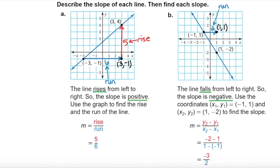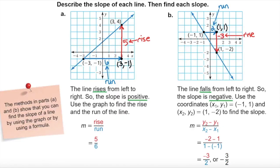Notice that 2 corresponds to the run, and negative 3 corresponds to the rise. So m equals negative 3 divided by 2, or negative 3 halves. The methods in parts A and B show that you can find the slope of a line by using the graph or by using a formula.